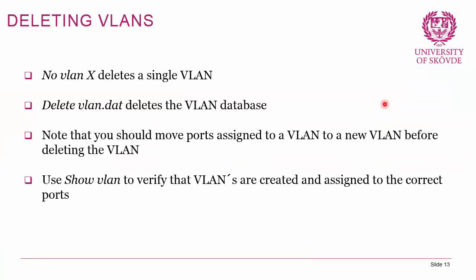To delete VLANs, you can do 'no vlan X' to delete a single VLAN. To delete the entire VLAN database, use 'delete vlan.dat' — that deletes the vlan.dat file. You should move ports assigned to a VLAN to a new VLAN before deleting it, because if you delete the VLAN that access ports are assigned to, the ports will no longer be able to communicate. Finally, use 'show vlan' to verify that VLANs are created and assigned to the correct ports.